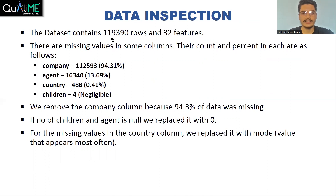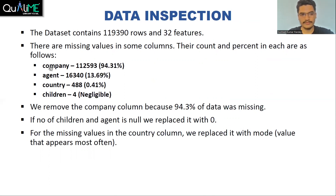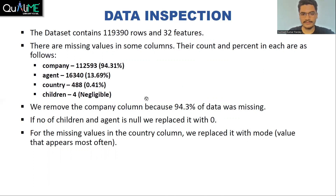The dataset contains 1,19,390 rows and 32 features. There are some missing values in columns: company, agent, country, and children. We removed the company column from the dataset because more than 94% of the data was missing, so there was no point keeping this column for analysis. For the children and agent columns, we replaced the null values with zero. For missing values in the country column, we replaced all null values with the mode — the most frequent value occurring in that column.